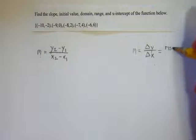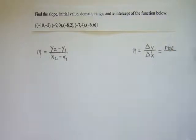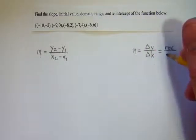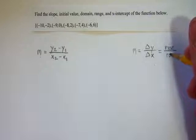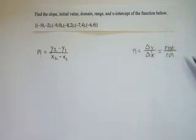And when we deal with graphs, we usually say that the change in y is how much the line or curve rises. And the change in x is how much it moves left or right, which we call run. So we sometimes hear slope described as rise over run.